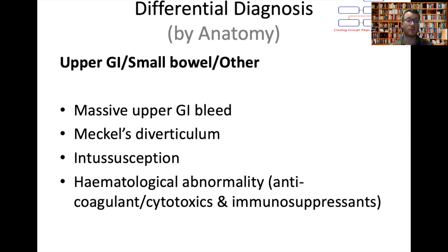There are other causes: massive upper GI bleeds can still present as fresh red bleeding per rectum. In children there's Meckel's diverticulum and intussusception — telescoping of the bowel into itself, mainly at the ileocaecal valve. Haematological causes include patients on warfarin for AF or heart valves, as well as those on DOACs such as apixaban or rivaroxaban.